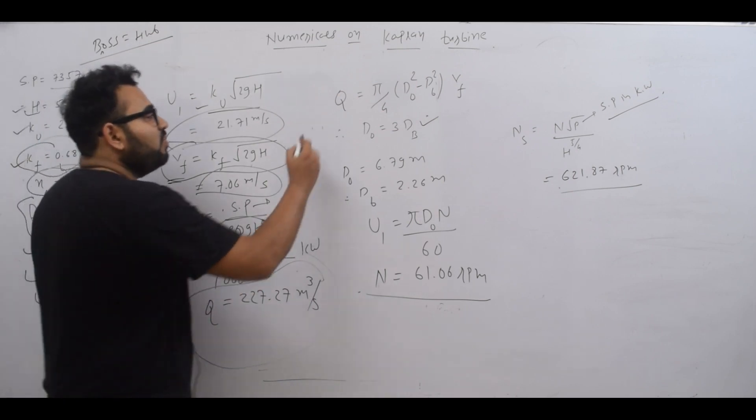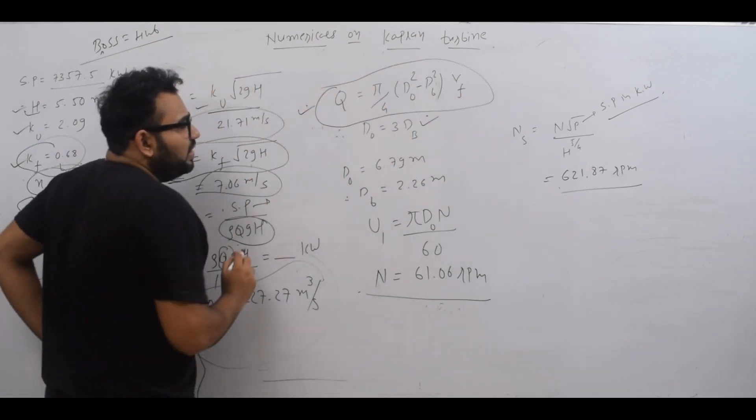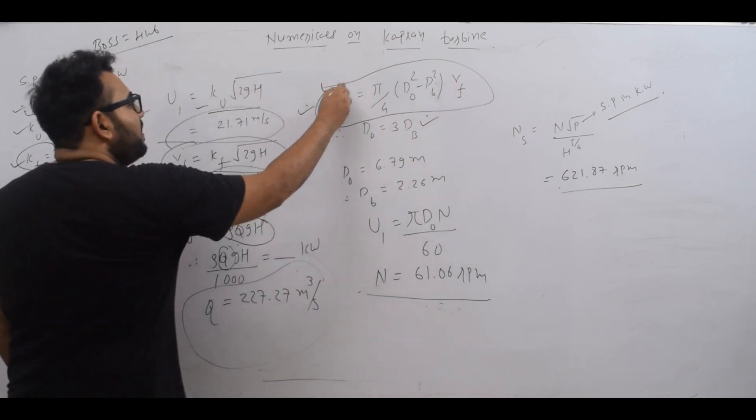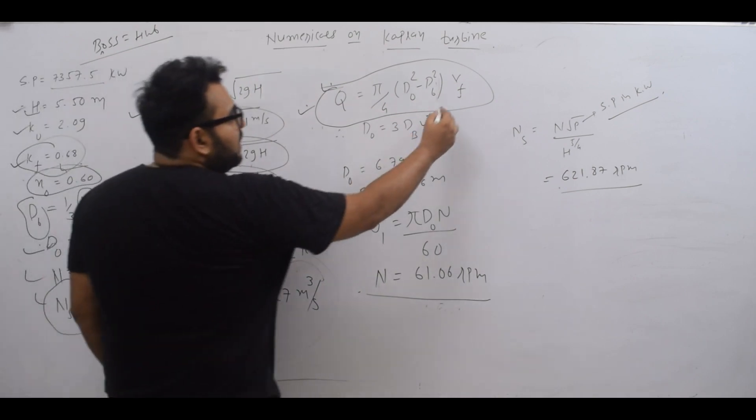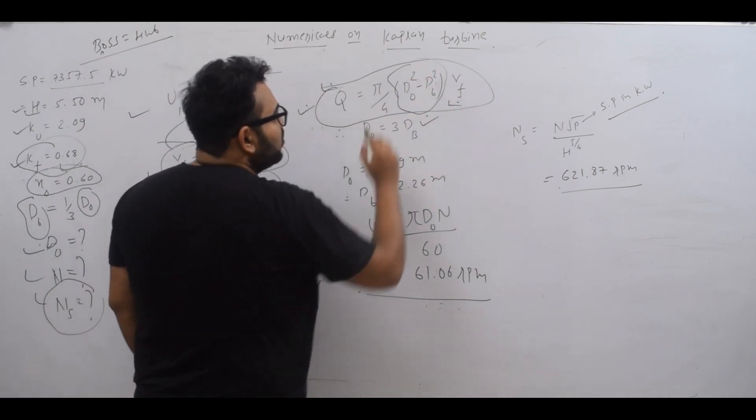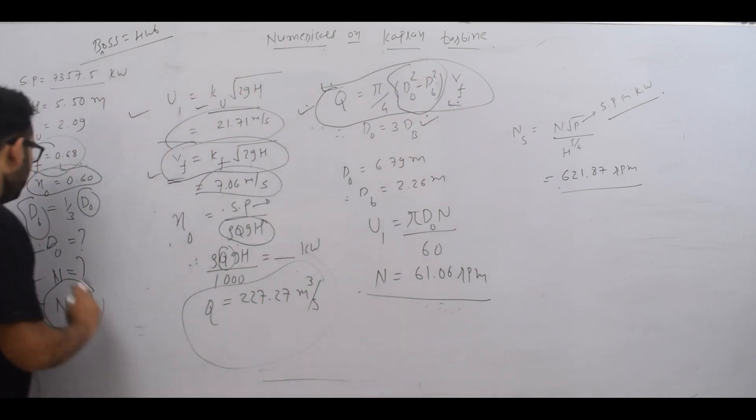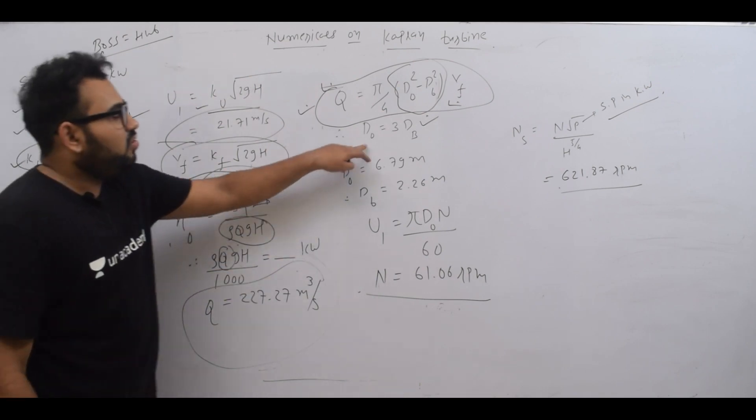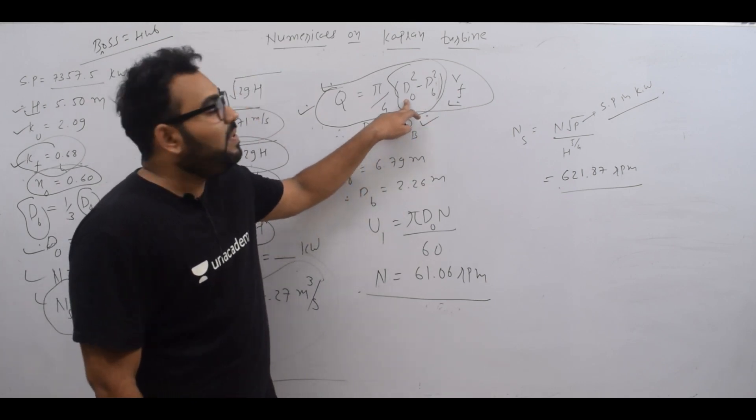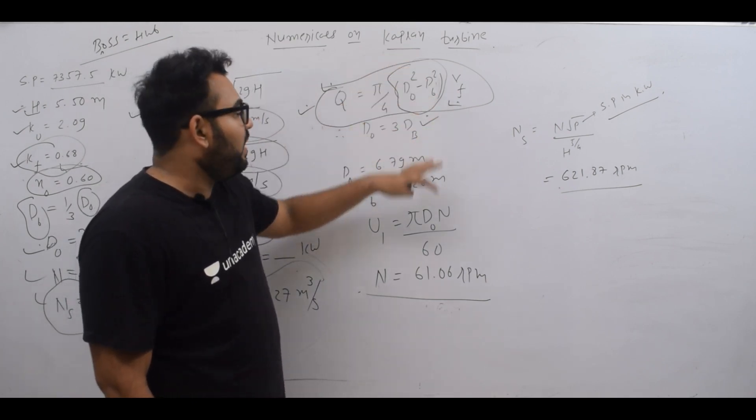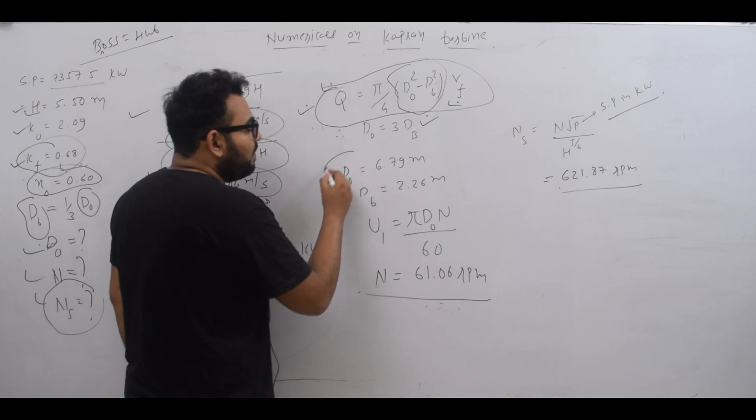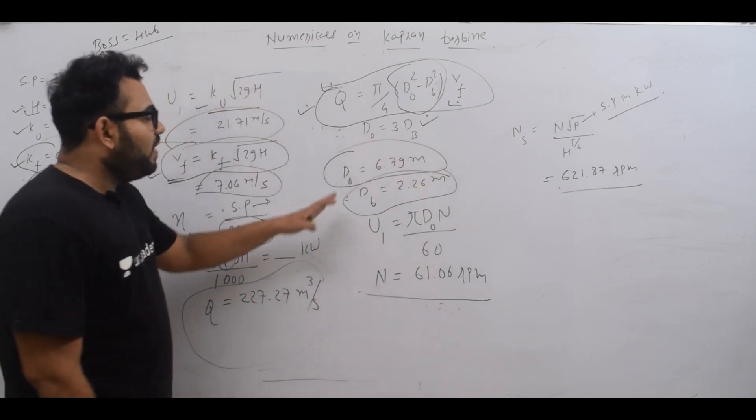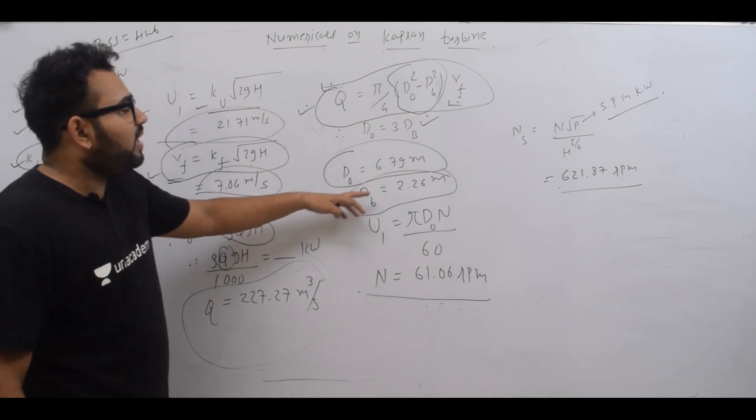Now we know discharge Q equals area times velocity, which is π/4 times (do² - db²) times Vf. We have the discharge, we have the flow velocity Vf, so the only missing term is this. We know that db equals one third of do, so we can write db equals do/3. Substituting this, we can solve for do. You will find do is 6.79 meters and db is 2.26 meters.